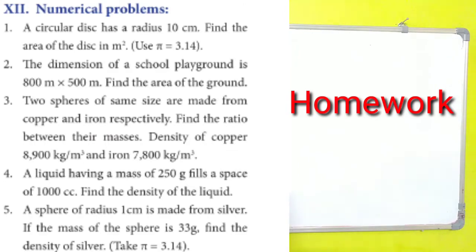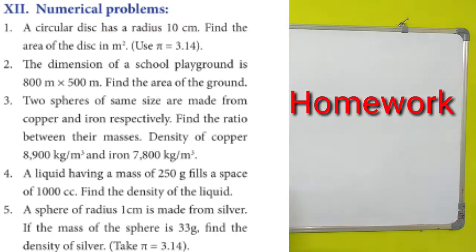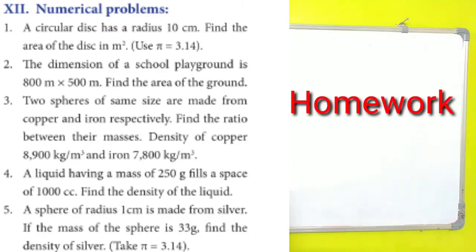Third, two spheres of the same size made up of copper and iron respectively — find out the ratio of their masses. Since they have the same size, use the respective densities to find the ratio. Fourth, a liquid having a mass of 250 grams fills a space of 1,000 cc — find out the density. Since we have mass and volume, density = mass ÷ volume.